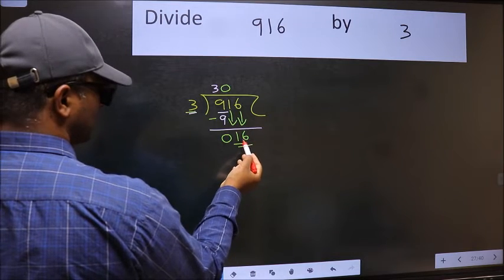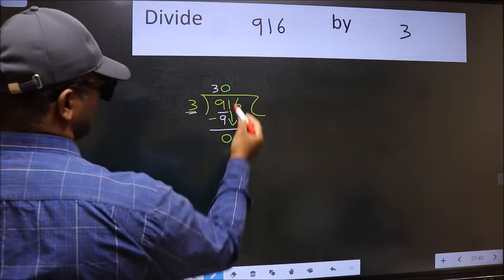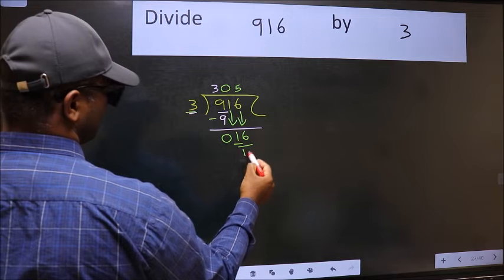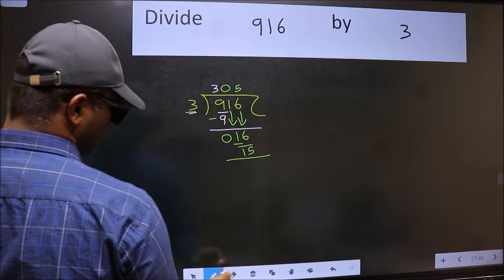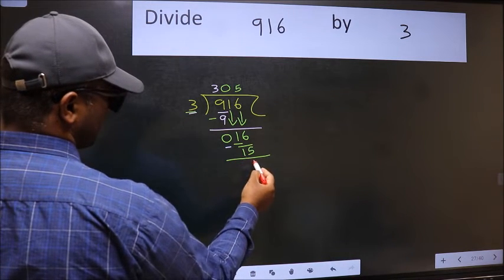Now, 16. A number close to 16 in the 3 table is 3 times 5 equals 15. Now we should subtract. We get 1.